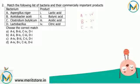Clostridium butylicum (C) pairs with butyric acid as its major product. Lactobacilli (D) pairs with lactic acid. Now, A4 is present in both option C and option D. Then B3 is only in option C, then C2 and D1. So the correct answer for this question is option C.